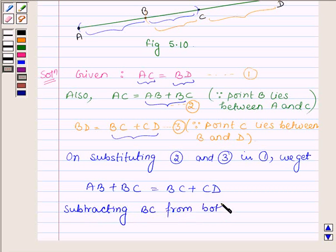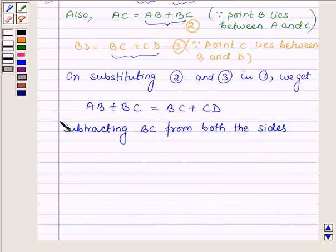we get AB plus BC minus BC is equal to BC plus CD minus BC.